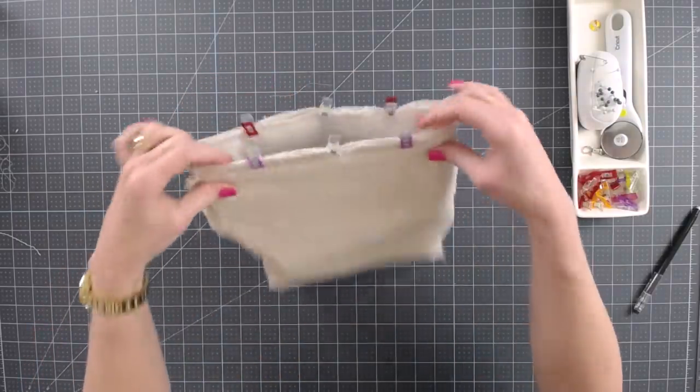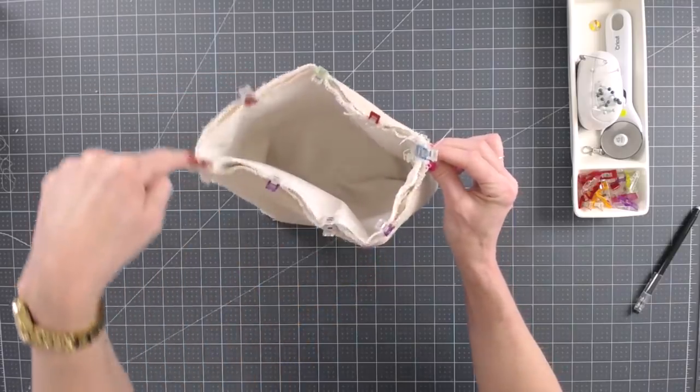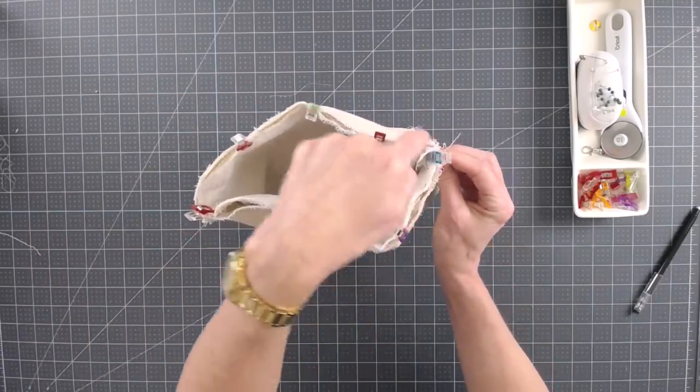By the way, when I sewed the trim on I used my zipper foot. That kind of helps when you have pom-poms or something hanging down a little bit. All right, so now you're going to take it over to your sewing machine and again start at a side seam and sew all the way around the top, backstitching at the beginning and the end.